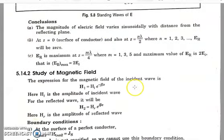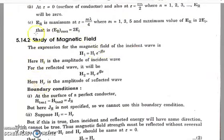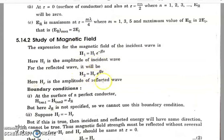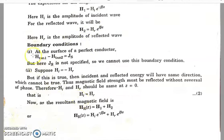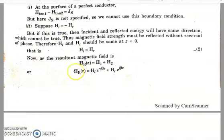Now studying the same for the magnetic field vector: the expression for the magnetic field of the incident wave is H1 = Hi · e^(−jβz), where Hi is the amplitude of the incident wave. For the reflected wave, H2 = Hr · e^(+jβz). The boundary condition applied here is H_tan1 − H_tan2 = Js. If Hi = −Hr were true, the incident and reflected energy would have the same direction, which cannot be correct.